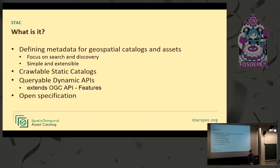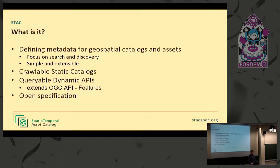There are also dynamic APIs, because if there are thousands and thousands of files you need to put them in a database and index them for better search. The STAC API is based on the recent version of OGC API Features — the former WFS (Web Feature Service) from the OGC — with a thin layer on top to make it searchable. And it's an open specification, which is why we're here: everyone can contribute.